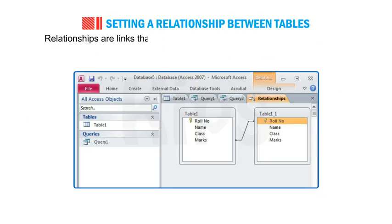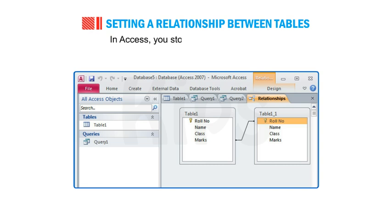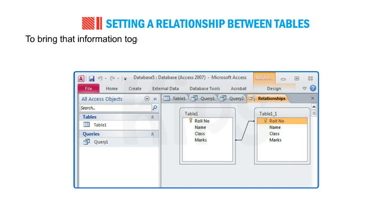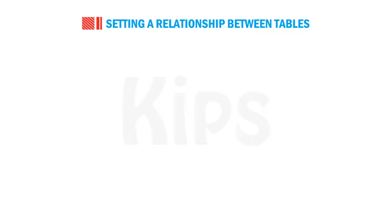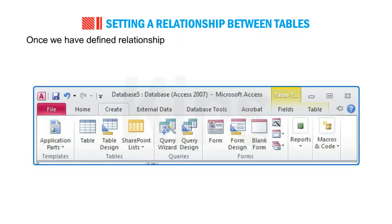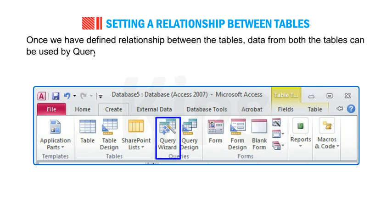Relationships are links that associate a field in one table with a field in another. In Access, you store data in multiple tables. To bring the information together, we need to define relationships between the tables. Once we have defined relationships between the tables, data from both tables can be used by a query, form, or report.